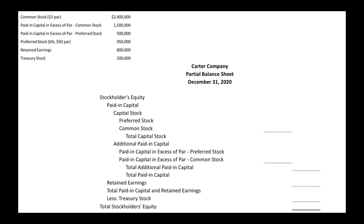Now let's start plugging in the numbers. Our preferred stock is $950,000 and common stock is $2,400,000. So our total capital stock — preferred stock plus common stock — is $3,350,000. That's the capital stock portion done.